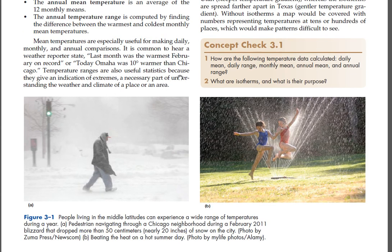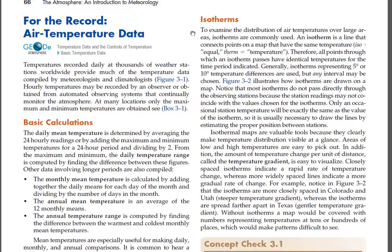Isotherms. To examine the distribution of air temperatures over large areas, isotherms are commonly used. An isotherm is a line that connects points on a map that have the same temperature. Therefore, all points through which an isotherm passes have identical temperatures for the time period indicated. Generally, isotherms representing 5-degree or 10-degree temperature differences are used, but any interval may be chosen. Figure 3-2 illustrates how isotherms are drawn on a map.